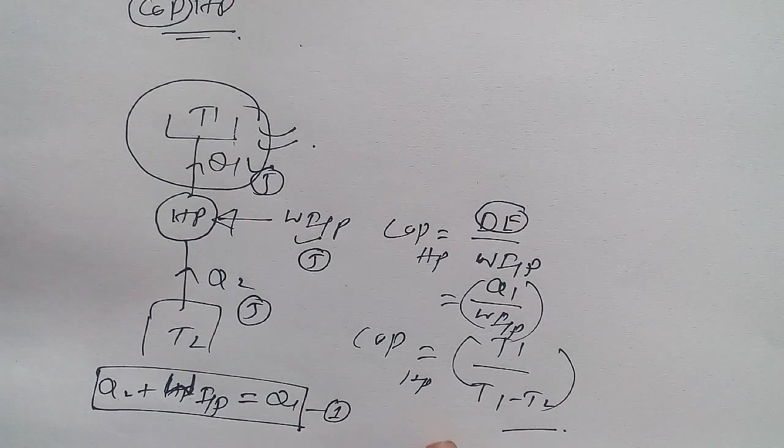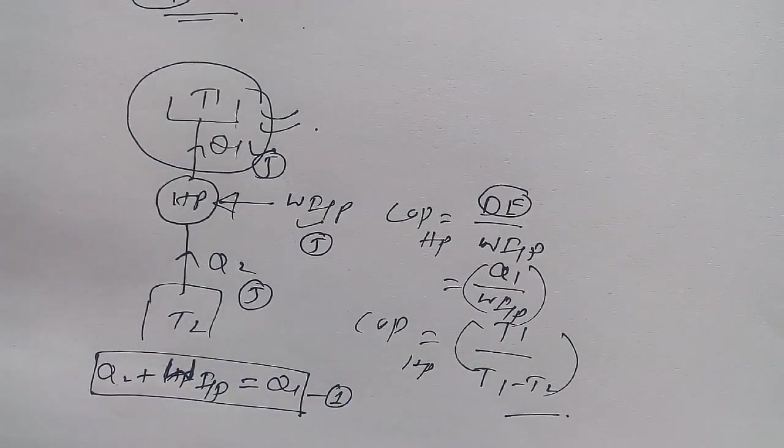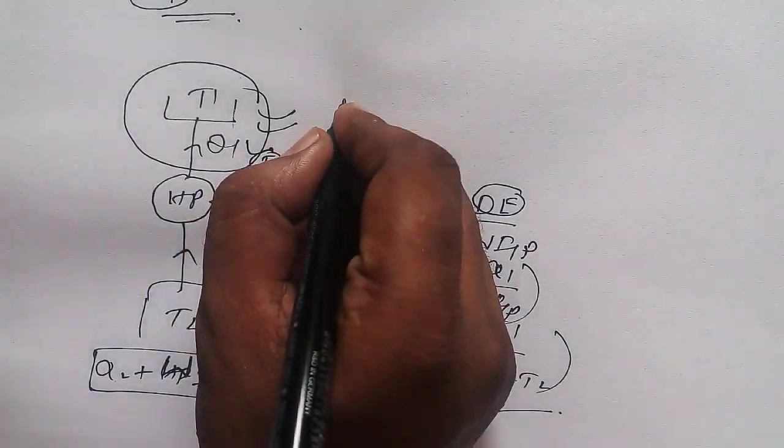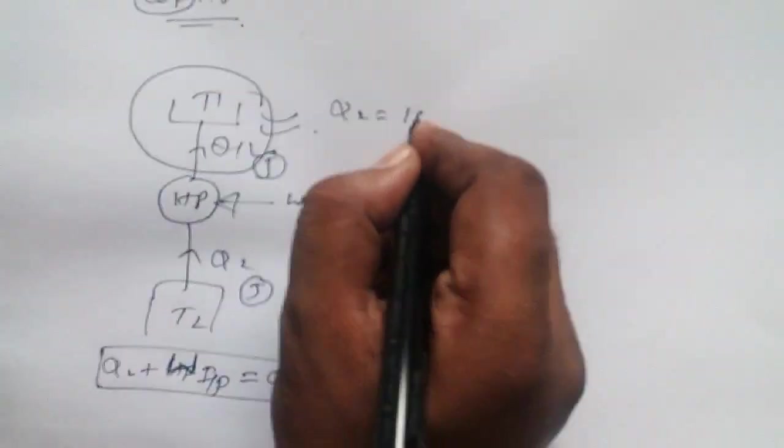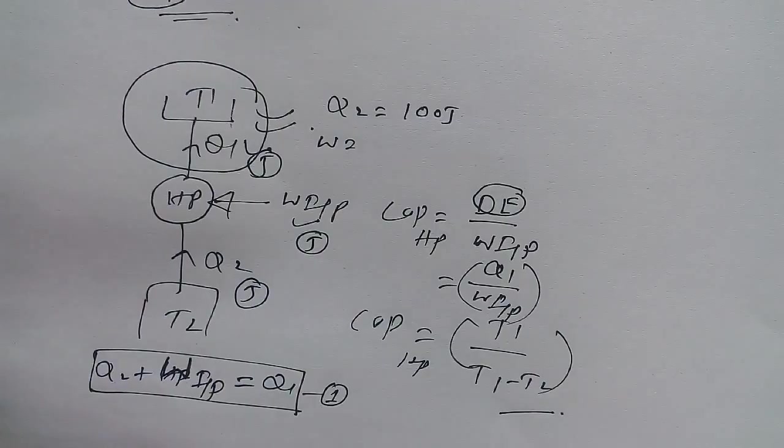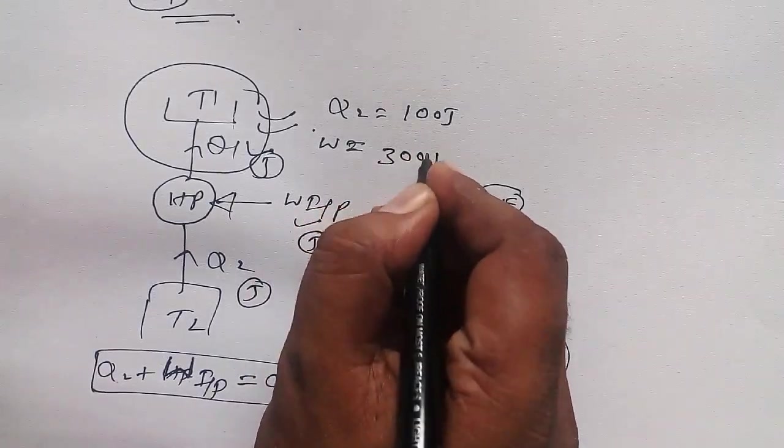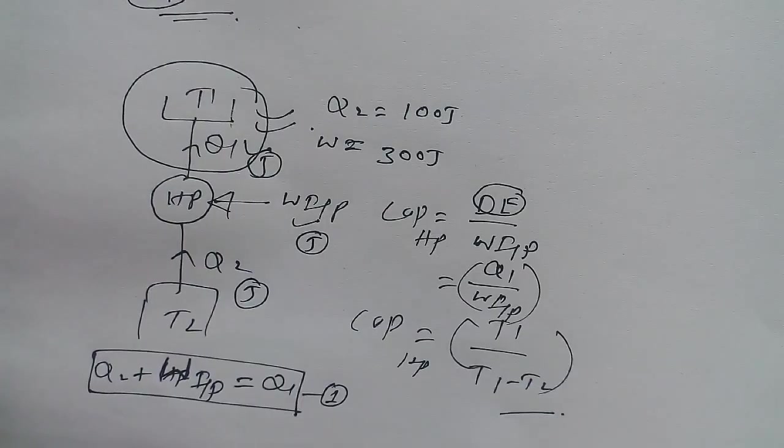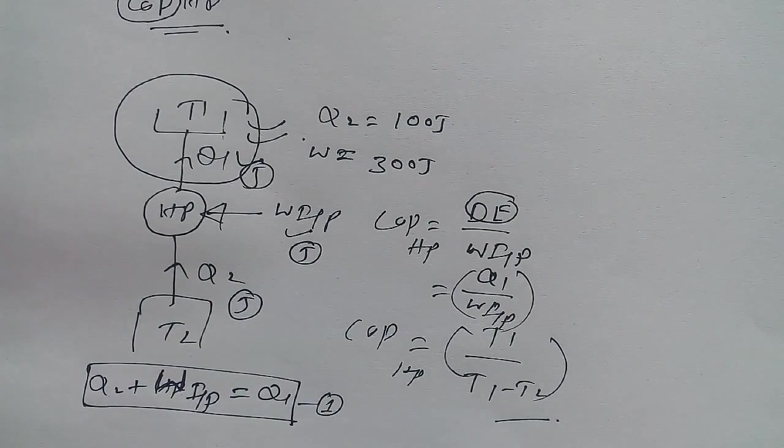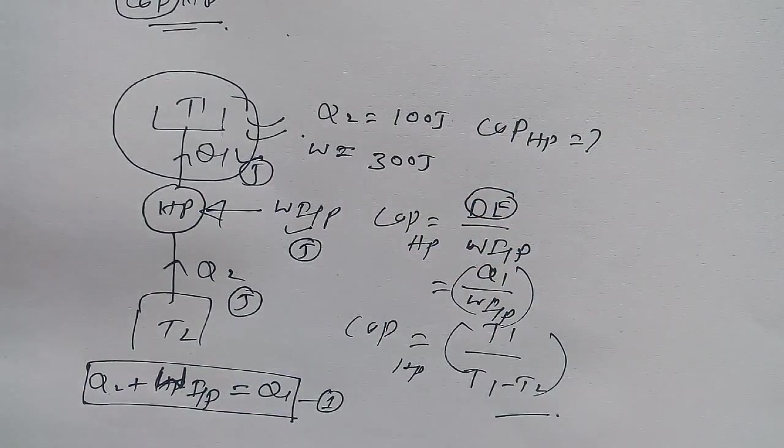Suppose we are given Q2 is 100 joules and work input is 300 joules, and we need to find out COP of heat pump for the ideal case. Ideal case means there is no loss, so we can apply this equation.